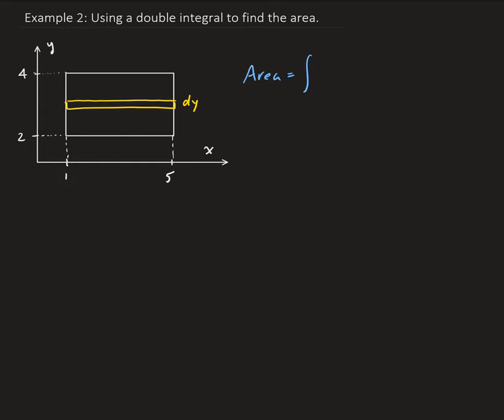So we want dy to be on the outside of the integral, which means we're going to have dx on the inside — so this is going to be dx dy. In terms of x, the bounds are going to go from one to five. And then for dy, it's going to go from two to four.